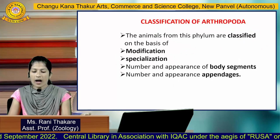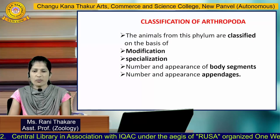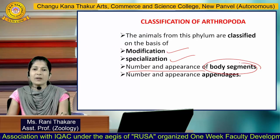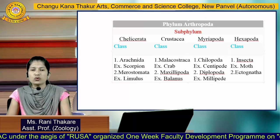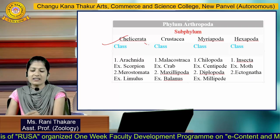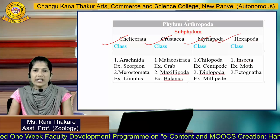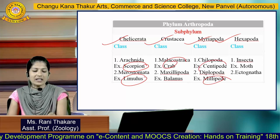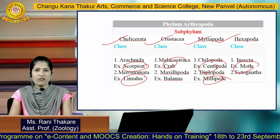Arthropods are classified on the basis of modification in their structure, specialization, number and appearance of body segments, and number and appearance of their appendages. They are placed into four subphylums: subphylum 1, Chelicerata; subphylum 2, Crustacea; subphylum 3, Myriapoda; and subphylum 4, Hexapoda. Examples studied include scorpion, Limulus, crab, millipede, and centipede.